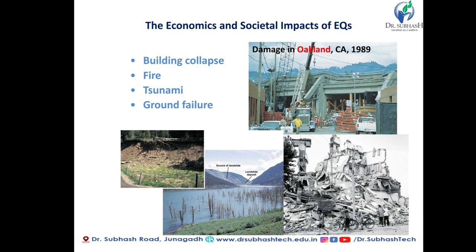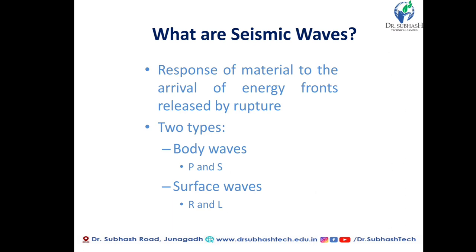Seismic waves are the response of material to the arrival of energy fronts released by the rupture. These waves directly affect the severity of the earthquake. There are basically two types: body waves, which travel through the internal body of material or rock, and surface waves. Body waves are further classified into P waves and S waves, and surface waves into R waves and L waves.